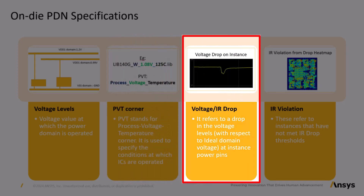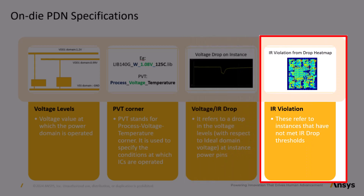Third, voltage or IR drop: this refers to a drop in the voltage levels relative to the ideal domain voltage at transistor power pins. For example, if instance A is connected to BDDA which has an ideal voltage of 0.9 volt and the measured voltage at its power pin is 0.85 volt, the drop would be 0.05 volt. The goal is to minimize this drop for all instances. Fourth, IR violations: this refers to instances that have not met IR drop thresholds, crucial to ensure reliable chip performance. Typical thresholds are 5-10% of the ideal voltage, which is design dependent.